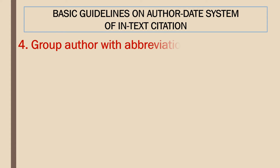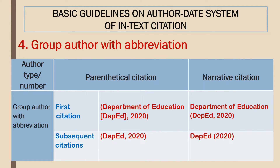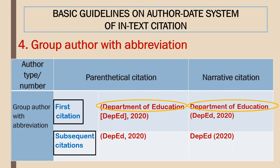Group author with abbreviation or acronym: it is important to note that the organization's name or the group author's name should be spelled out in the first citation, and if the said organization will be cited for the second time and so on, the abbreviation or acronym should be used. This is true in both parenthetical and narrative citations. The abbreviated form is enclosed inside brackets in the first parenthetical citation, while in the first narrative citation it is placed inside parentheses together with the publication date, separated by a comma.